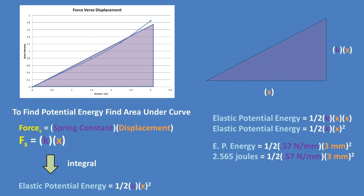Plugging in all of our dividends, we are left with an elastic potential energy of 2.565 joules.